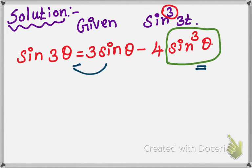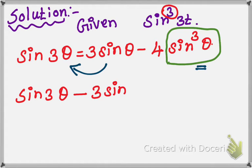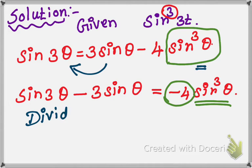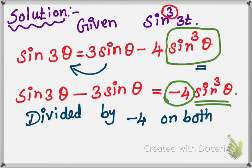Moving terms to the opposite side: sin 3θ minus 3 sinθ equals minus 4 sin³θ. Now divide both sides by minus 4.